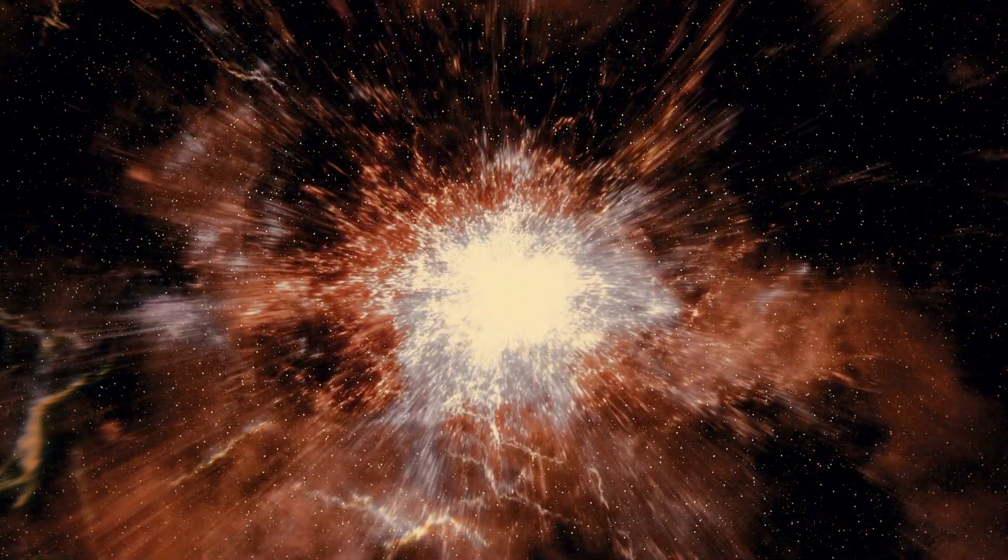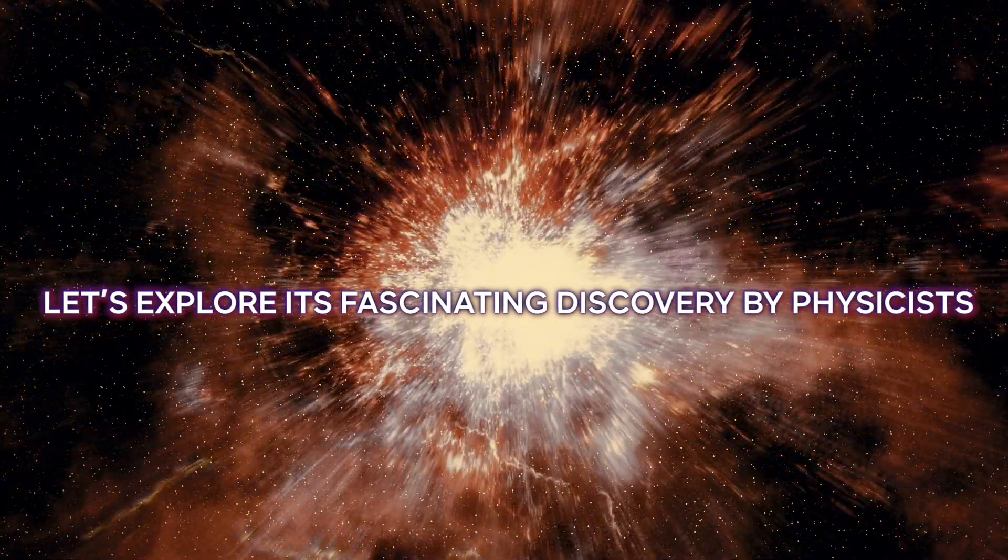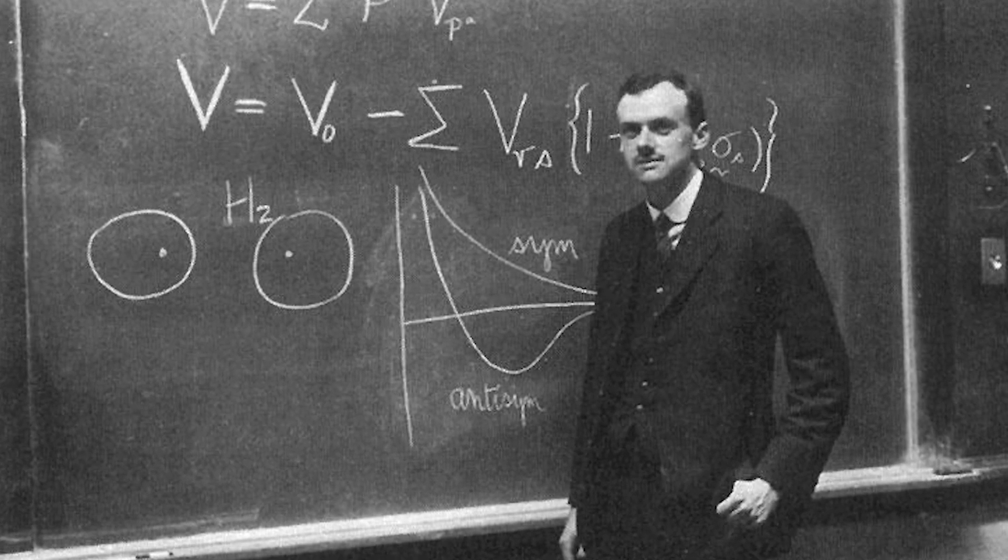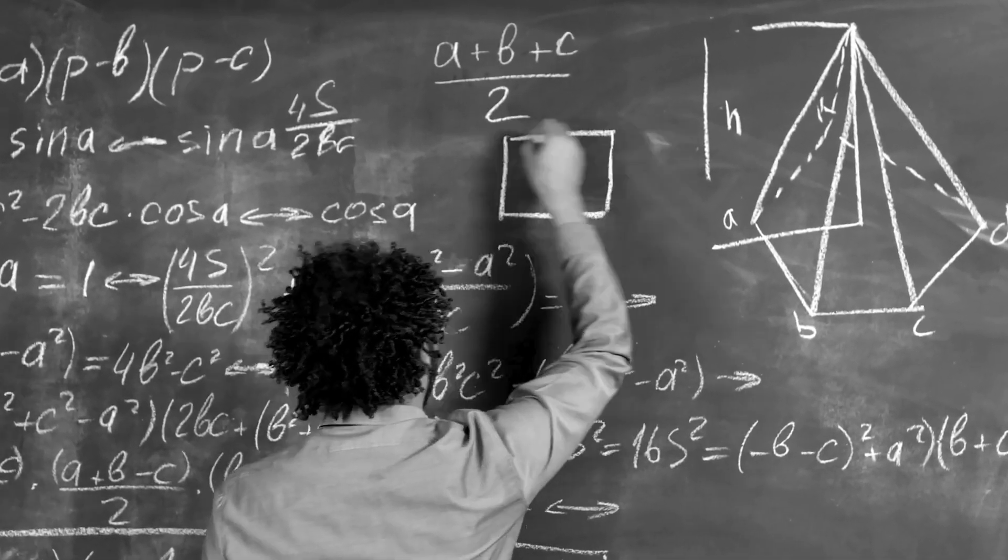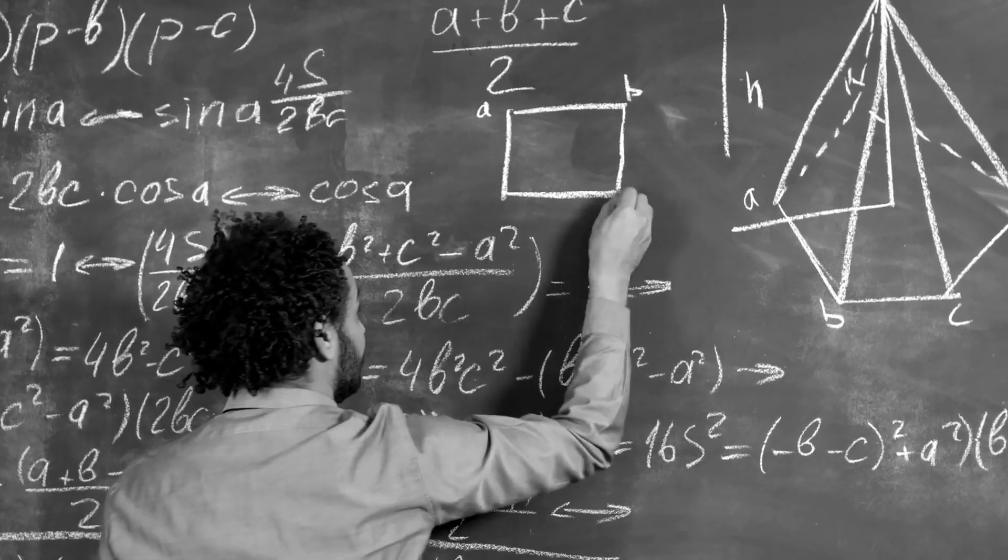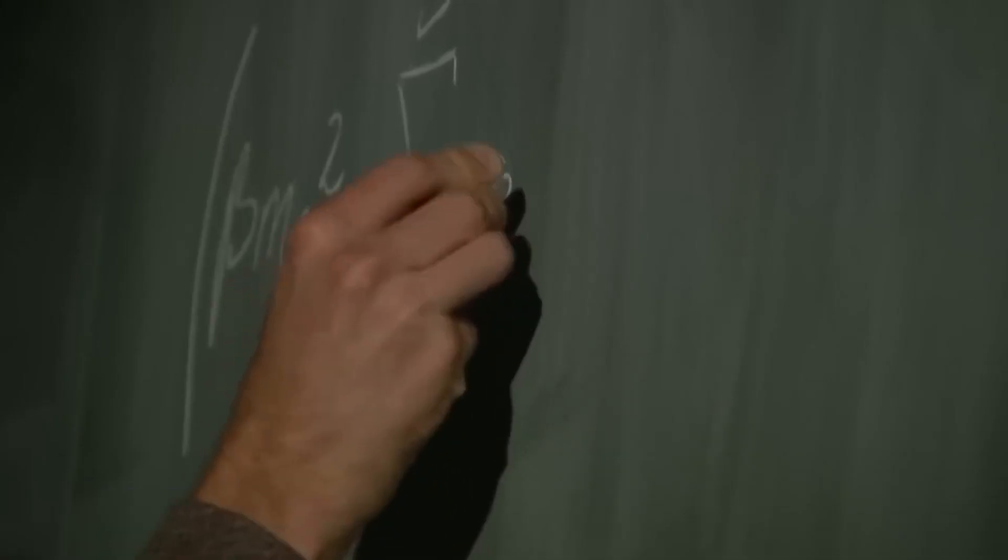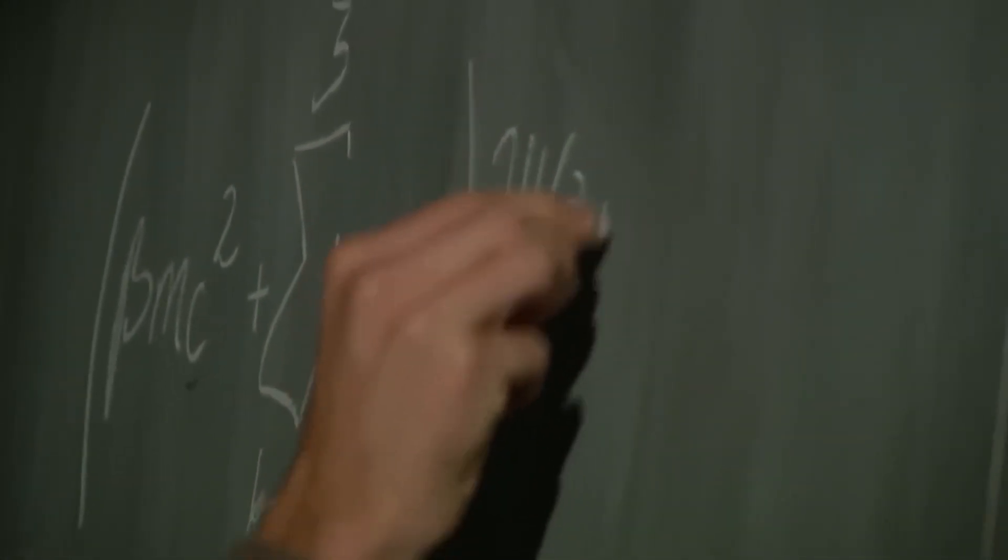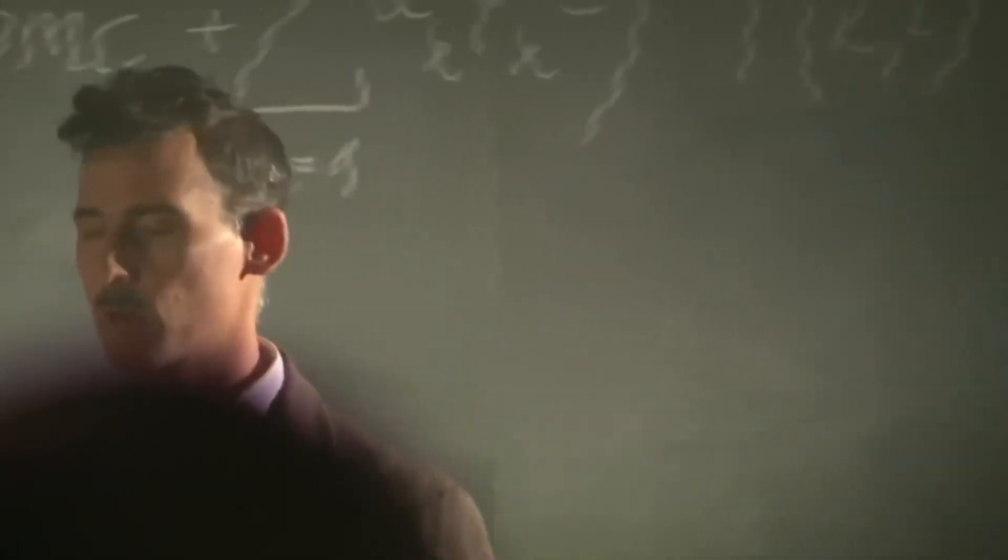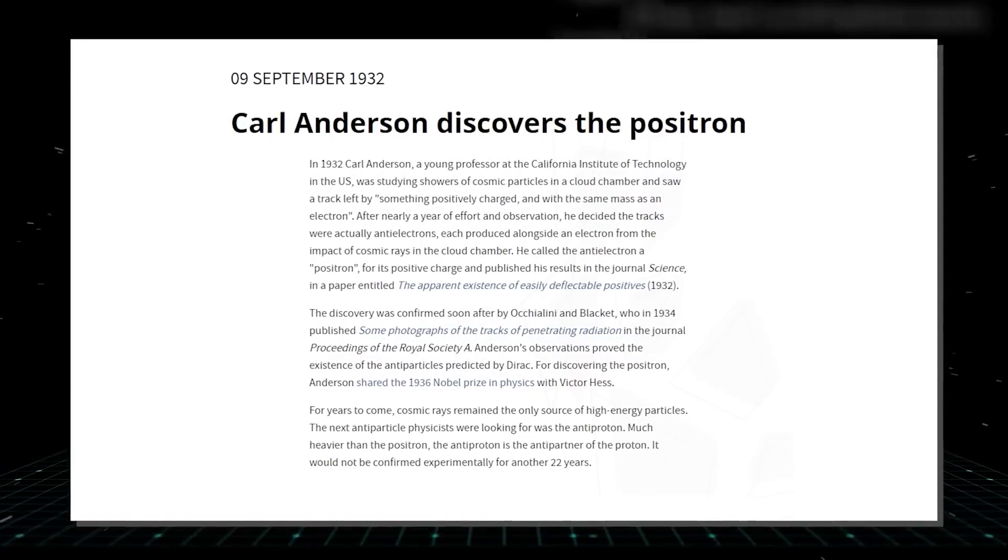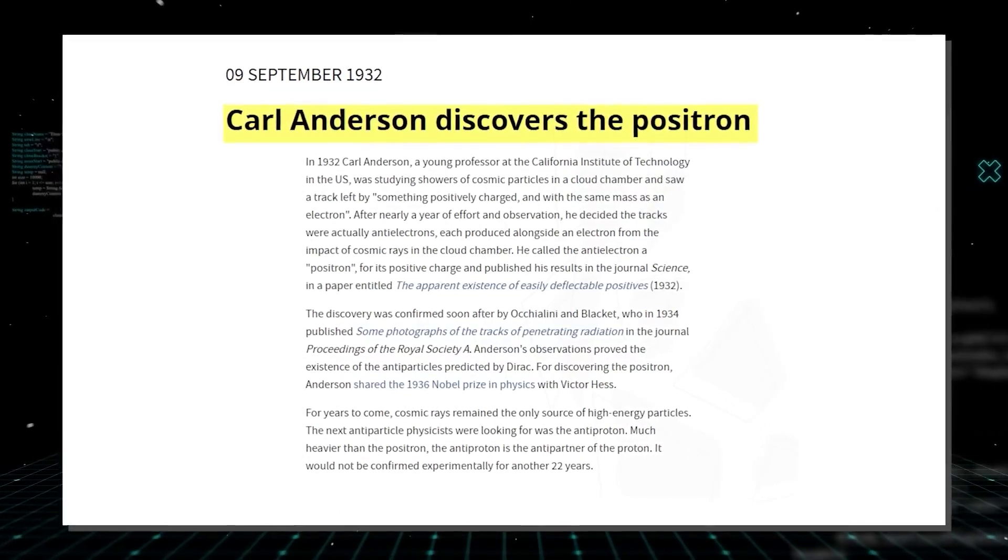Now that we understand what antimatter is, let's explore its history. Dirac made a groundbreaking discovery while working on an equation that combined quantum mechanics with the special theory of relativity. Dirac stumbled upon a fascinating result - electrons with negative energy traveling backward in time. A less confident physics student might have turned red with embarrassment and redone the math, but Dirac stood by his calculations, choosing to reinterpret this puzzling solution as an anti-electron possessing positive energy and moving forward in time. A few years later, in 1932, experimental physicist Carl Anderson observed the positron, confirming Dirac's ideas and propelling both scientists to Nobel Prize-winning fame.